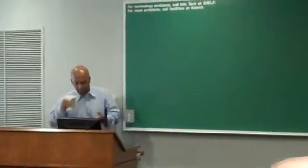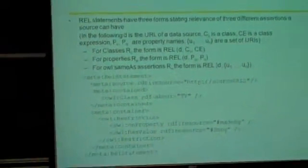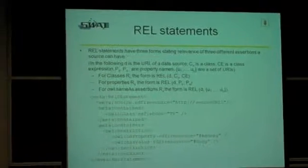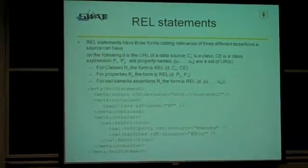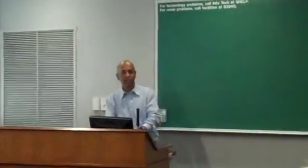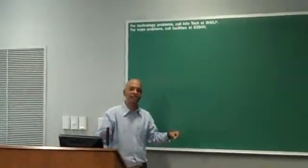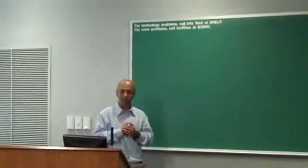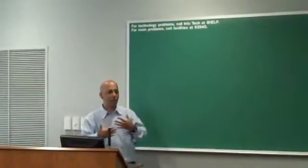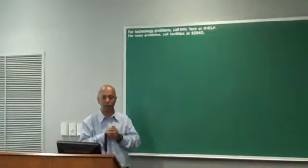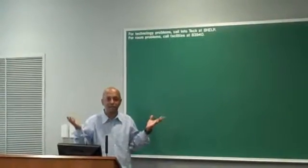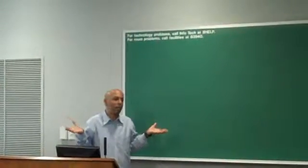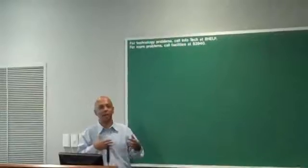The REL statements are a way to summarize a Semantic Web data source so that we can match it with the query and find it relevant. It's a metadata scheme, and we have three forms of relevance metadata. The reason behind that is there are three types of data available in Semantic Web data sources. The Semantic Web is about classes and properties based on description logic, so we want the source to be able to say it has some information on a given class or property.